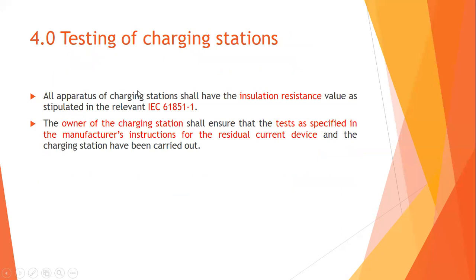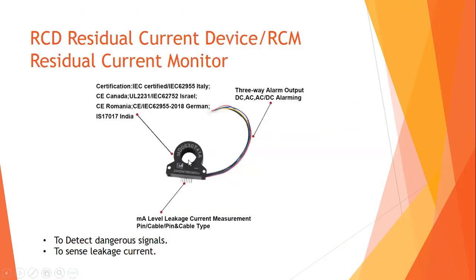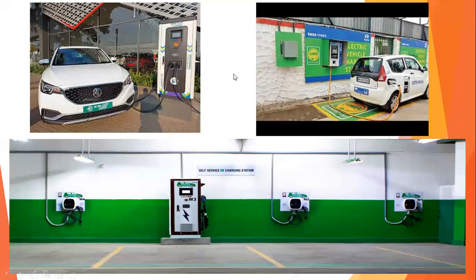Rule 4 covers testing of charging stations. All apparatus of charging stations shall have insulation resistance values as stipulated in IEC 61851. The owner of the charging station shall ensure that tests specified in the manufacturer's instructions for the residual current devices are carried out. For example, Tata Power has installed charging stations and creates SOPs for the owner on how it should be tested daily or on a periodic basis.